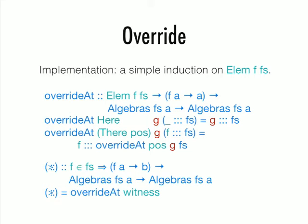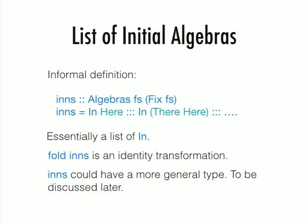This is what we do. Given an algebra, an Fs algebra, if you know that F is an element in Fs, you can rewrite the corresponding entry by the Fs algebra you specify. Then override is simply an induction on this elem Ffs. We have a smarter version of override which is also called override, in which the witness is computed for you. You want to have something to start with, so this Inns is essentially a list of Ins.